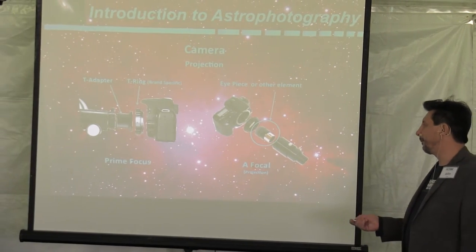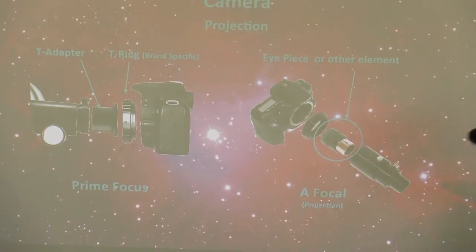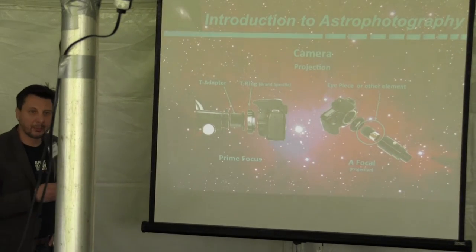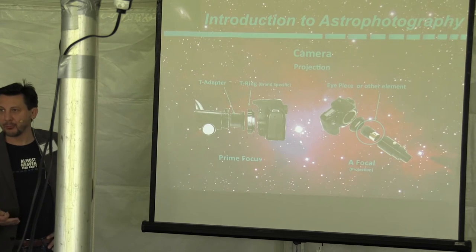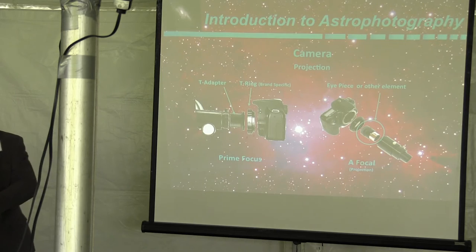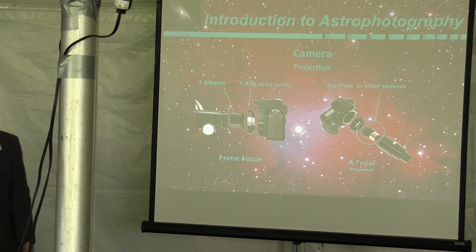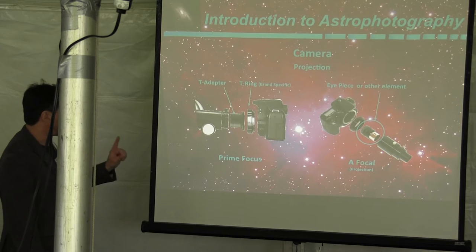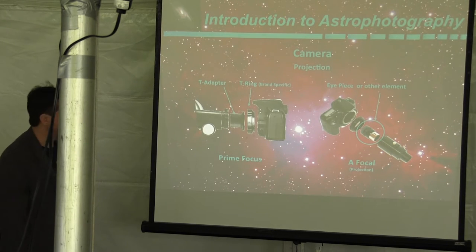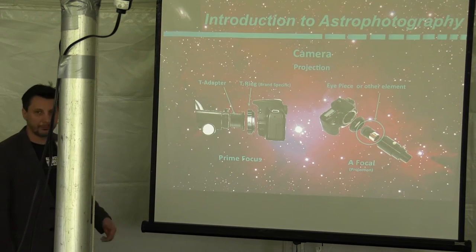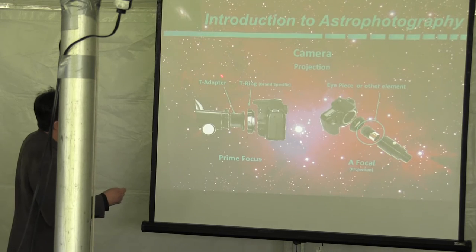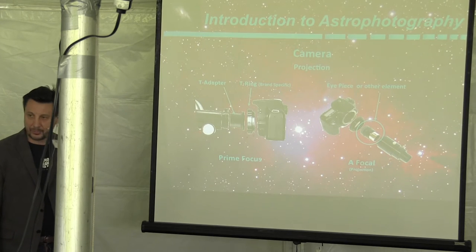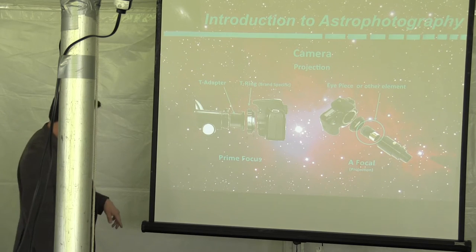Prime focus is where you actually mate the camera directly to the telescope. The telescope actually acts as your telephoto lens. Most astrophotographers will tell you to go this route. You need two additional pieces before you connect your DSLR. You're going to want the T-ring, so you get a T-ring for a Canon, a T-ring for a Nikon. Then you get this T-adapter that connects that T-ring to the telescope, and you're ready to go.